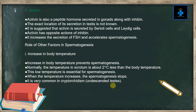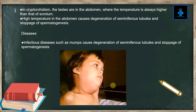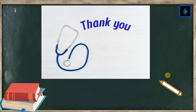Role of other factors in spermatogenesis: increase in body temperature prevents spermatogenesis. Normally the temperature in the scrotum is about two degrees Celsius less than the body temperature, and this low temperature is essential for spermatogenesis. When the temperature increases, spermatogenesis stops. This is very common in cryptorchidism, that is undescended testis, where the testis are in the abdomen. The higher abdominal temperature causes degeneration of seminiferous tubules and stoppage of spermatogenesis.